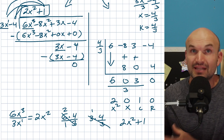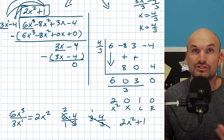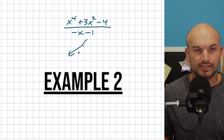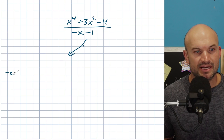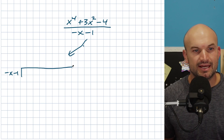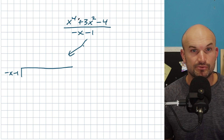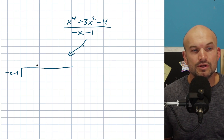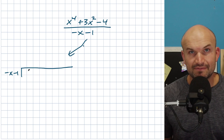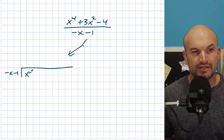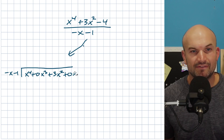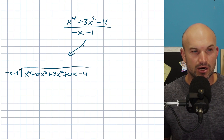Now let's look at one more example involving missing terms to see how that changes both long division and synthetic division. To set this up in long division, I take negative x minus 1 as the divisor on the outside. Notice the dividend doesn't have an x³ term or an x term. You can space it out or use place values — you don't have to, but it helps for accounting purposes to keep track of what you're subtracting.